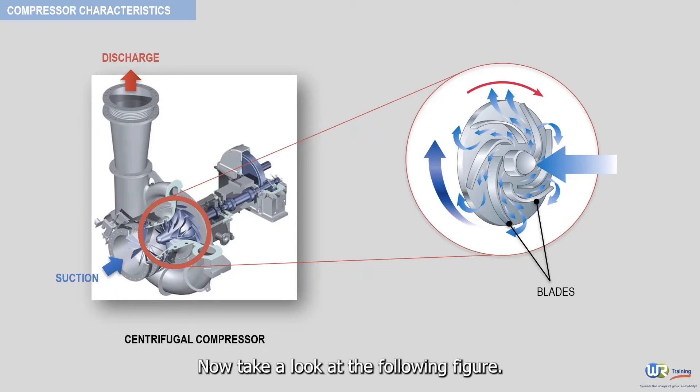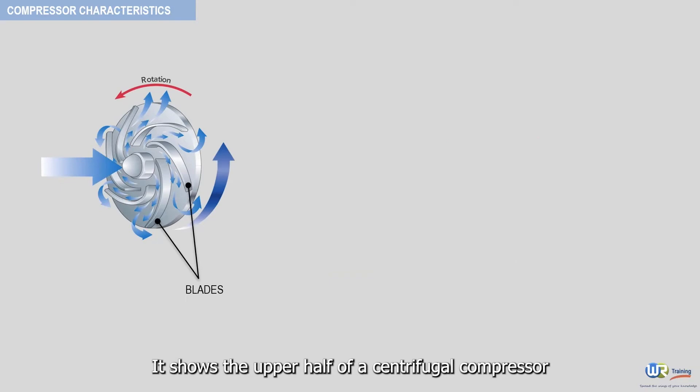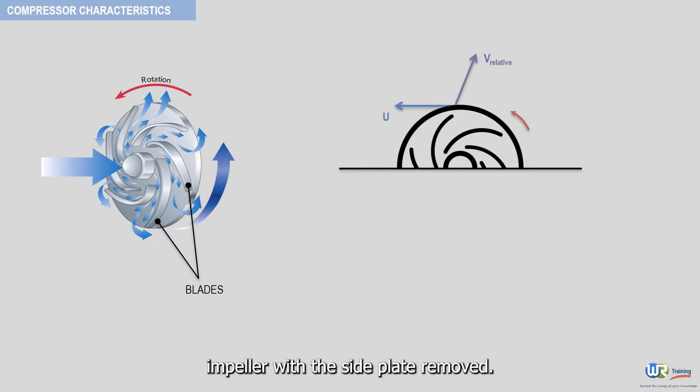Now, take a look at the following figure. It shows the upper half of a centrifugal compressor impeller with the side plate removed. In this schematic, the velocity vector U is the blade discharge tip speed, and the velocity vector V sub-relative is the discharge gas relative velocity.